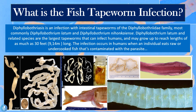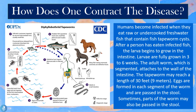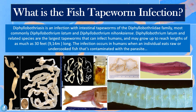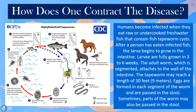So how can one contract the disease? Humans become infected when they eat raw or undercooked freshwater fish that contain fish tapeworm cysts. After a person eats the infected fish, the larvae begin to grow in the intestines of the human. The larvae are fully grown in about three to six weeks, manifesting into the adult worm. The adult worm is segmented and attaches to the wall of the intestine, and the eggs are formed in each segment and passed into the stool.